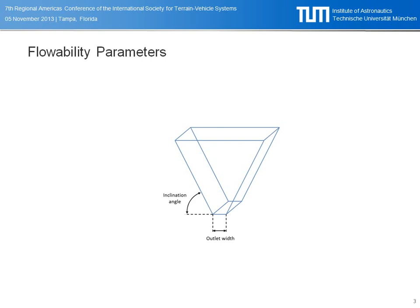What kind of parameters does such a system have? We're talking about two-dimensional slotted hoppers. Most relevant for a hopper design is the inclination angle and the outlet width.